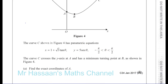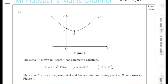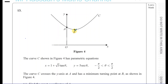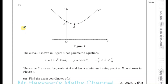The curve C crosses the y-axis at A and has a minimum turning point at B, as shown in figure 4. Part A of the question says: find the exact coordinates of A. Since A is a point on the y-axis, x is equal to 0.